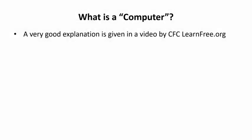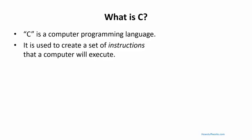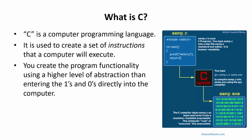Thanks to GCFLearnFree.org for that explanation. Now let's look at the programming language C. C is the name of a programming language — it's a way to write code to tell a computer to do something. The code you write in C creates a set of instructions that the computer will execute. These instructions ultimately become the ones and zeros like you saw in the computer video, since a computer only operates on ones and zeros.